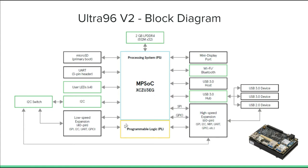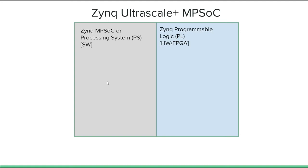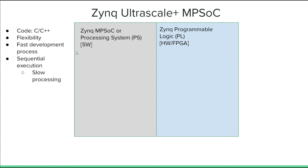In Zynq FPGAs, when we talk about software development we mean implementation on the processing system, and when we talk about hardware development we mean implementation on the programmable logic. You can think of software implementation as the part on the Zynq processing system, and hardware development as the part on the programmable logic. For software development on the Zynq processing system, we normally develop in C or C++. The Zynq processing system consists of multiple ARM cores which you can program quite easily and very flexibly.